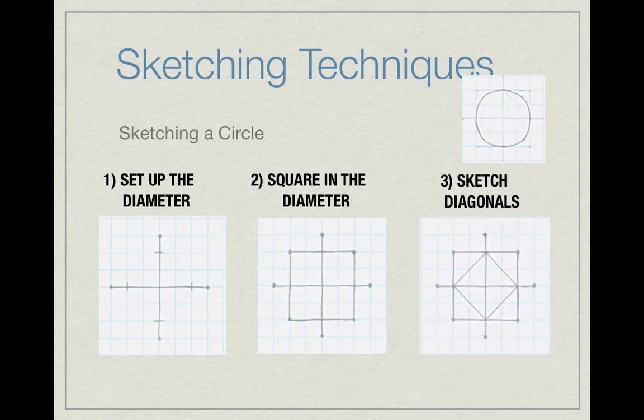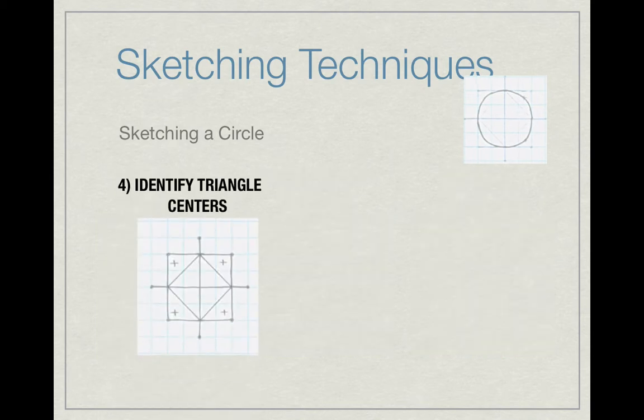Step number three, sketch the diagonals. So basically connecting the horizontals with the vertical by taking off of that angle. We're dividing, basically, each of those boxes in half diagonally. Once we have done that, we can easily identify the triangular centers, as you can see by those hash marks. Put those into the center of each of those squares. Because the triangles on either side of that square are equal, you can see by how they're divided. So basically, the center would be a mark somewhere in the center of that square.